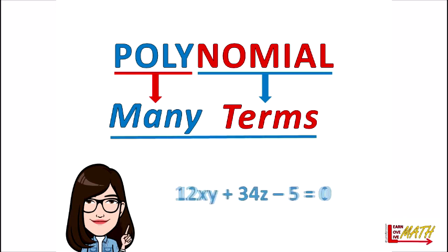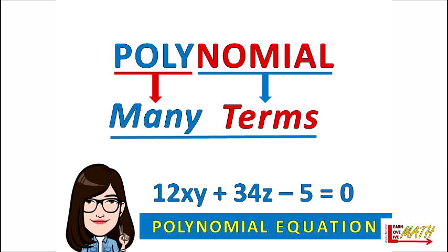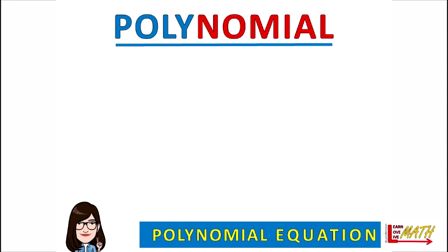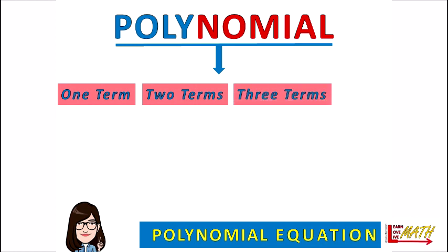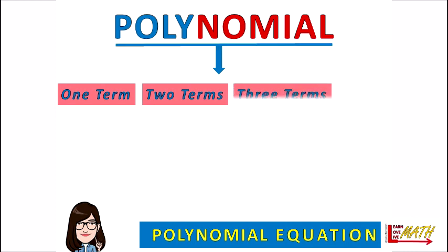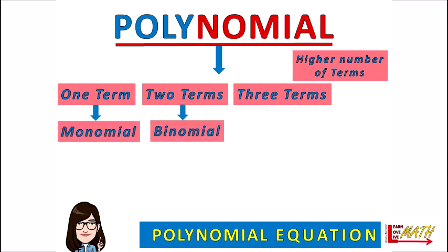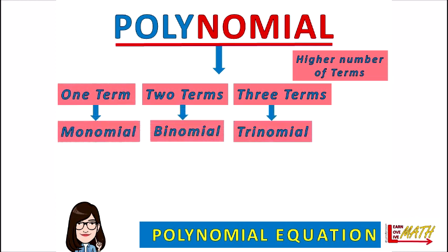If we equate a polynomial to zero, it will be called a polynomial equation, and it has only positive integers. A polynomial can be an expression of just one term, two terms, three terms, or even a higher number of terms. All these categories come under one roof: polynomial expressions. Expressions with one term are called monomials, two terms are binomials, and three terms are trinomials — mono means one, bi means two, and tri means three.